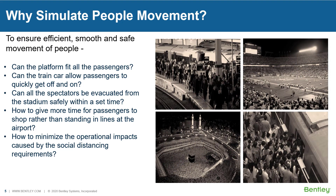And more specifically, to answer questions like the following: Can the platform fit all the passengers? Can the train car allow passengers to quickly get off and on? Can all the spectators be evacuated from the stadium safely as quickly as possible within a set duration of time? How to give more time for passengers to spend money shopping rather than standing in lines at our airports? And how to minimize the operational impacts caused by social distancing requirements?